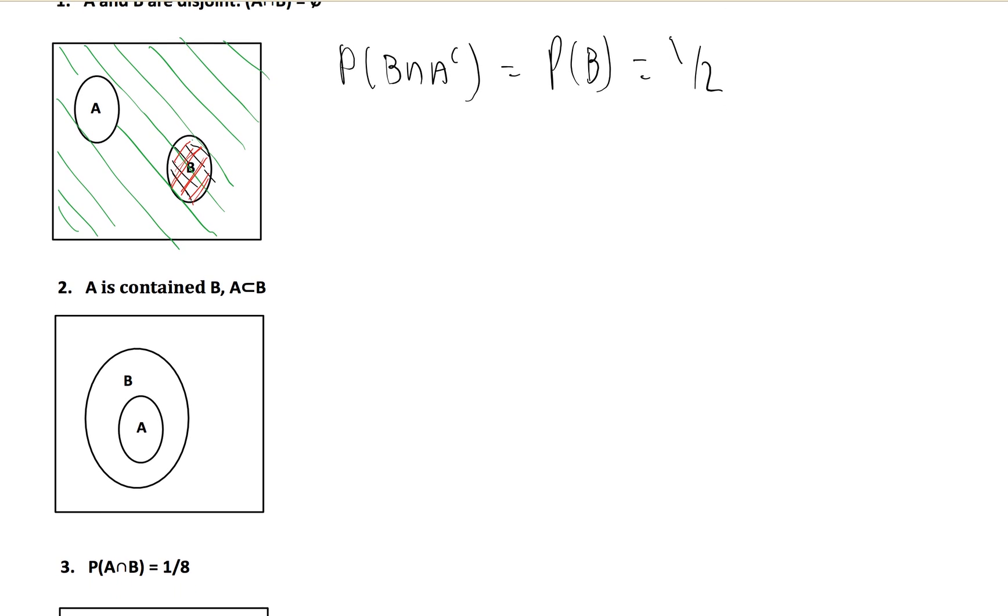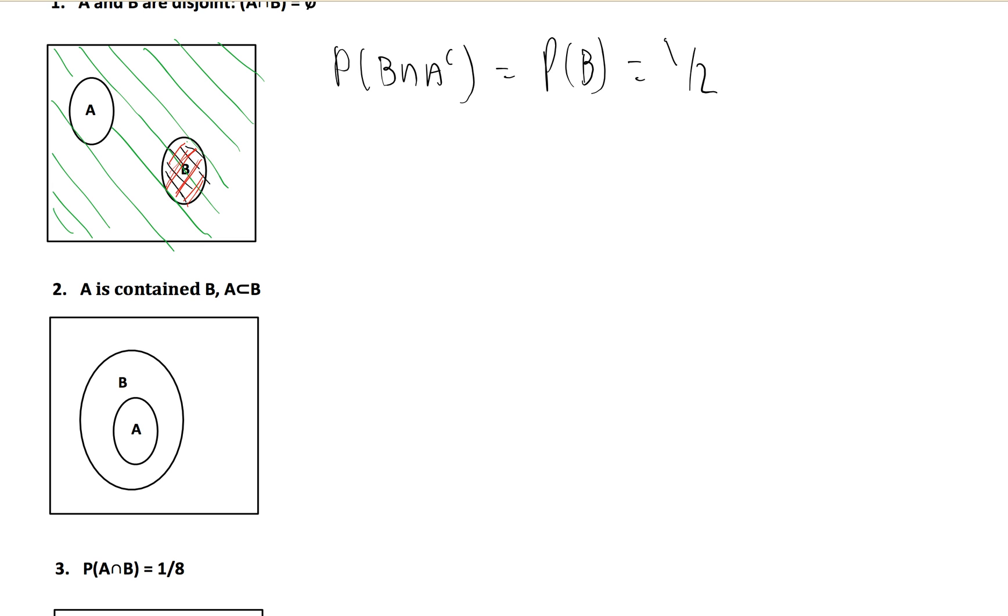Now, as we keep going, A is contained in B. So A is a subset of B, like I've drawn in this Venn diagram here. And what we're going to use here is a formula called the partition of B.